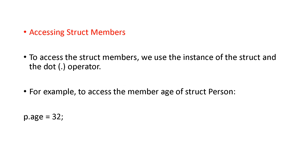Next is how to access structure members. We have to use the dot operator. For example, P dot age — that means P is that particular instance which you have created, age is the element within the structure, and you have given the value as 32. So the person's age is assigned as 32.